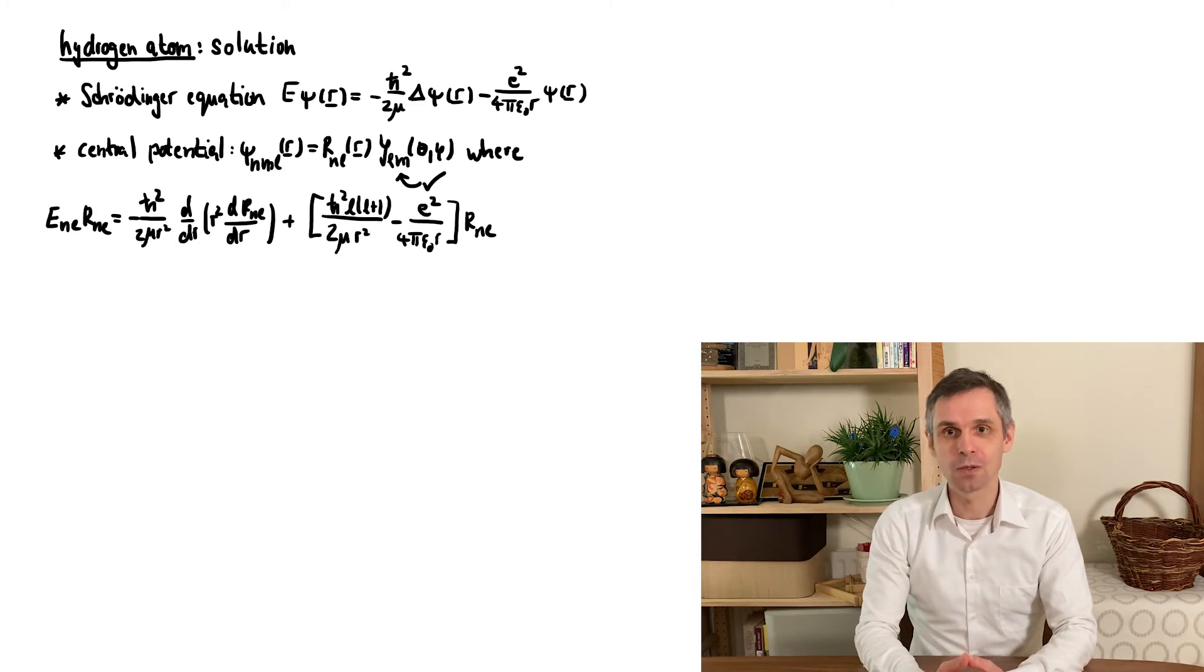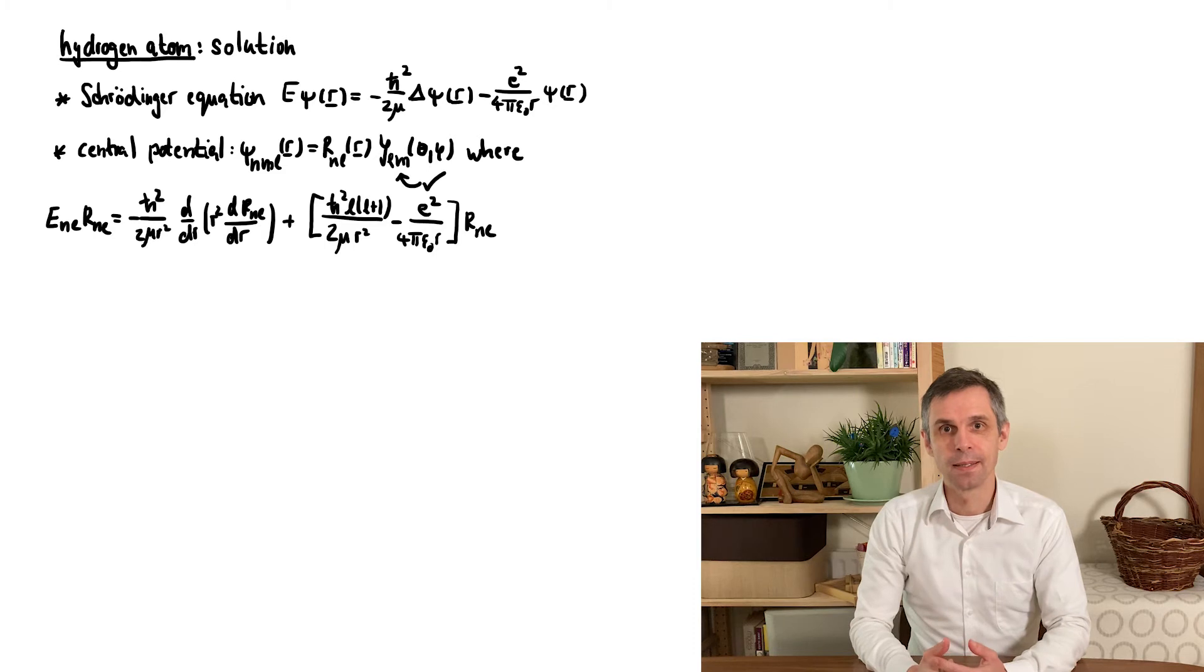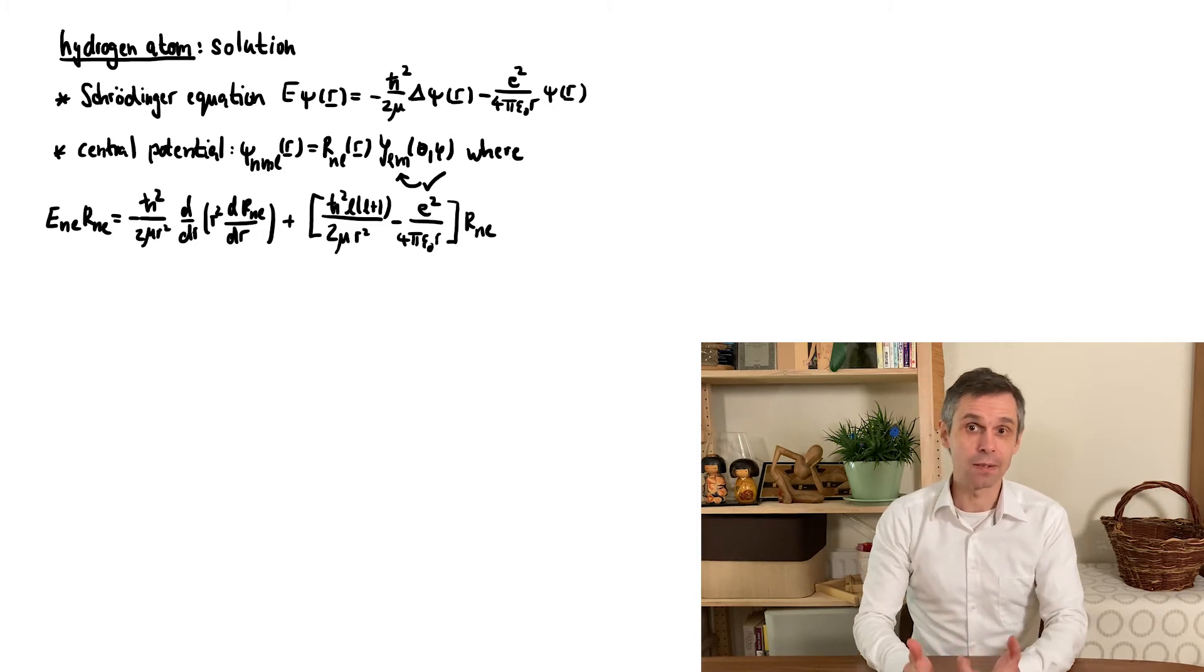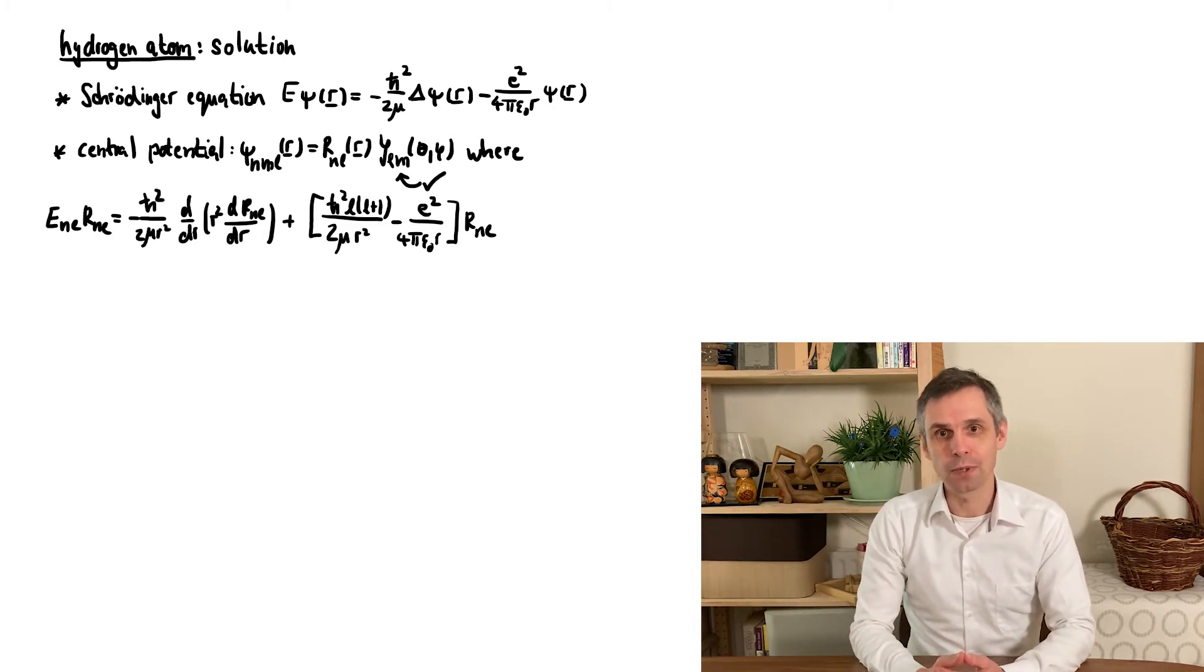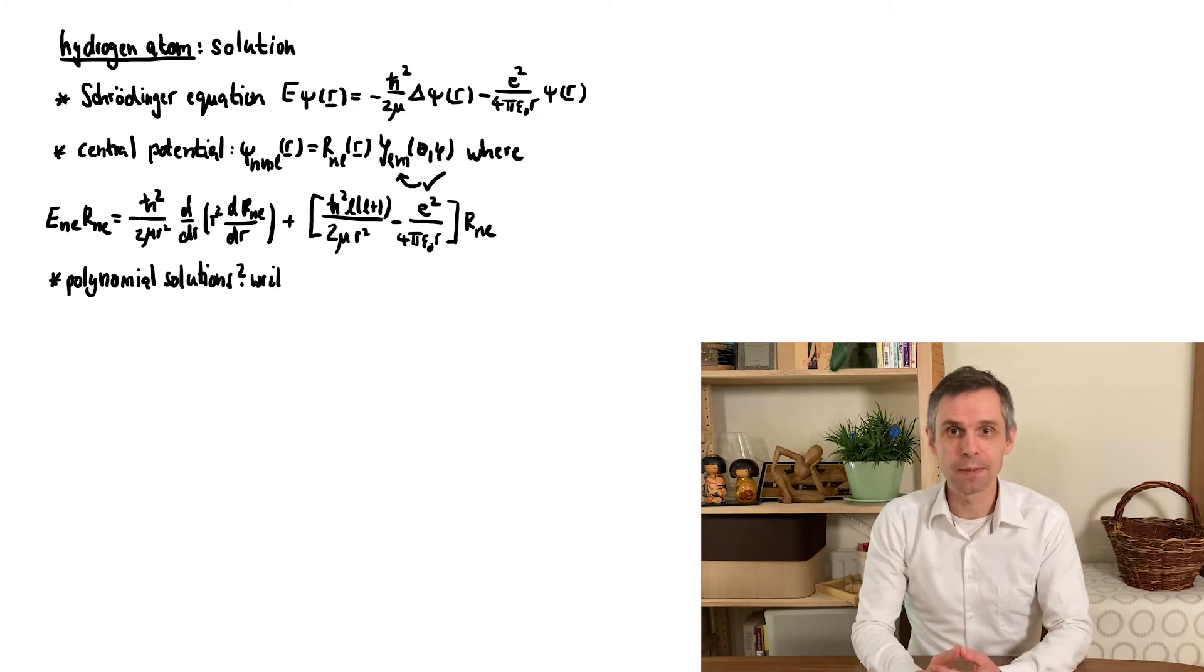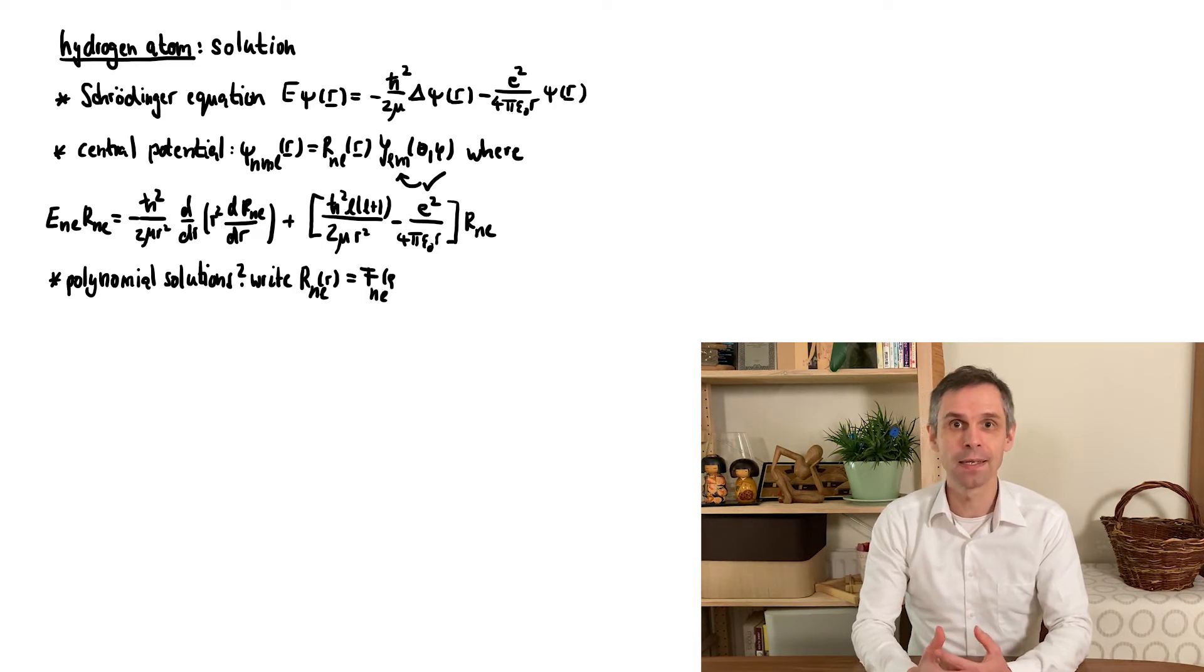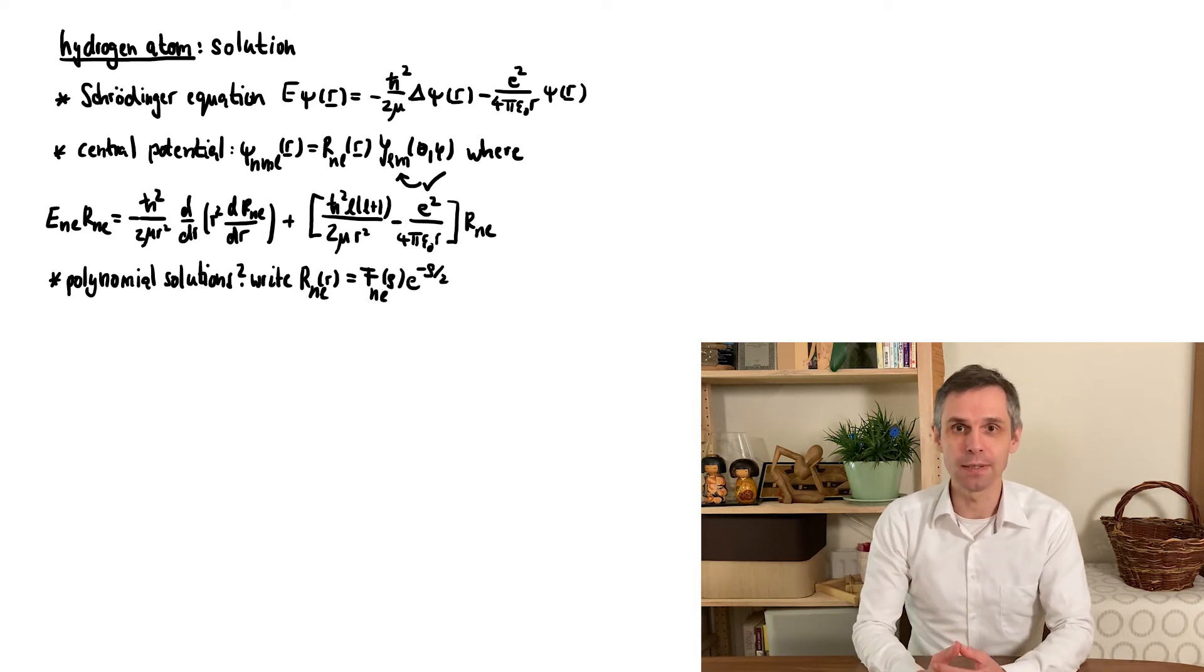Note, for instance, that the magnetic quantum number does not enter the radial equation, so its solutions cannot depend on it, and that also applies to the energies. Now, as previously, when encountering such a differential equation, we seek to bring it into a form where the physical solutions are just polynomials. There is of course no guarantee that we can do this, but here we indeed again succeed when we factor out an exponential radial dependence with a suitably scaled exponent, and the remainder we call f.